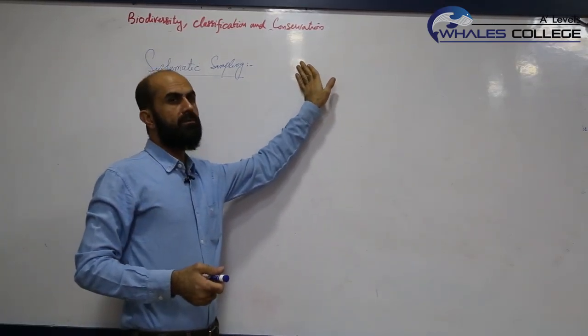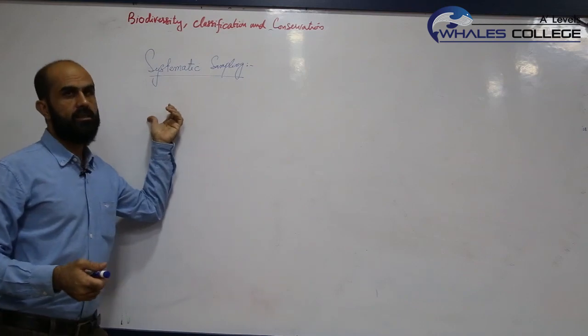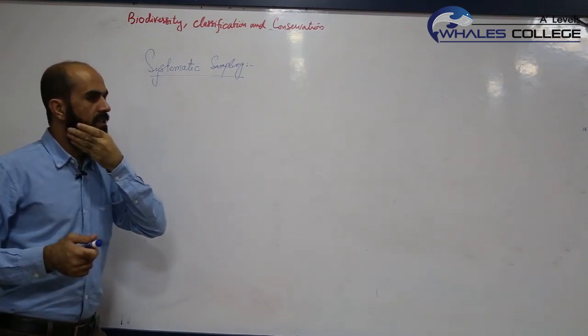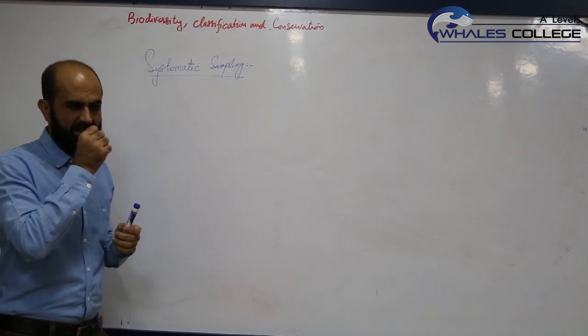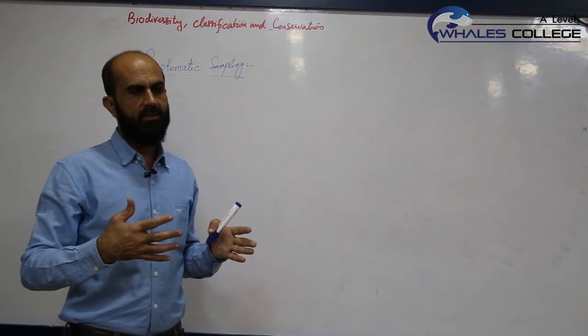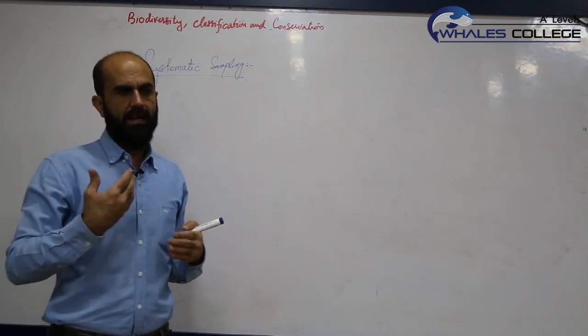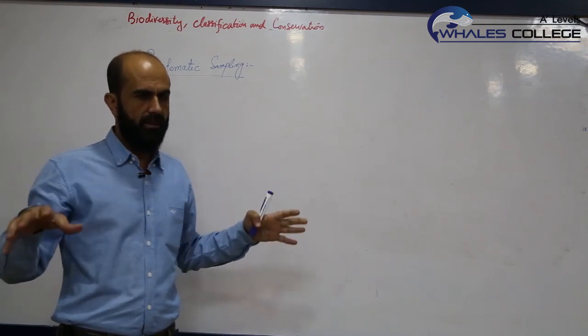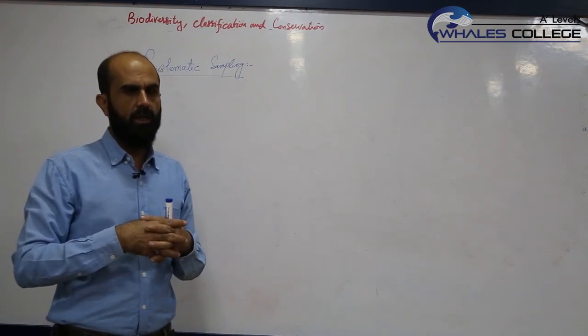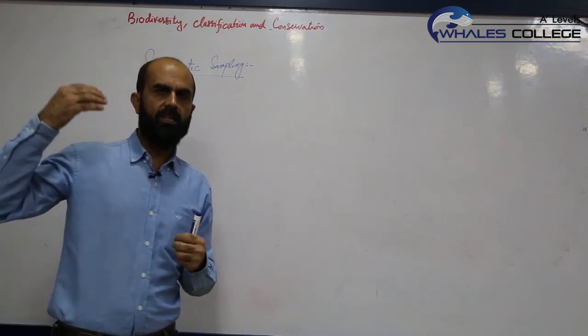Now after random sampling we will talk about systematic sampling. Systematic sampling should be done in an area where there is some favoritism. The distribution or abundance of organisms are dependent on some external factors.